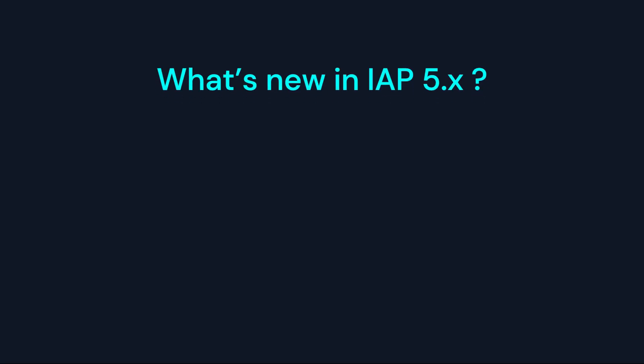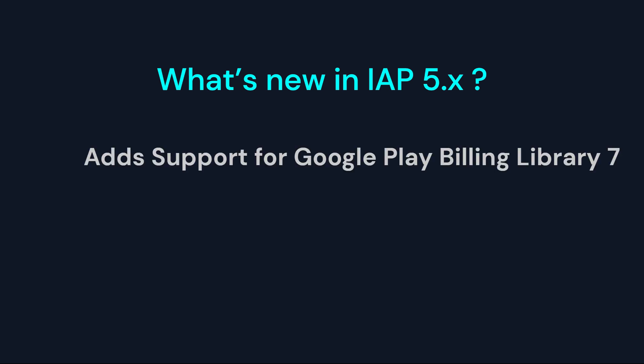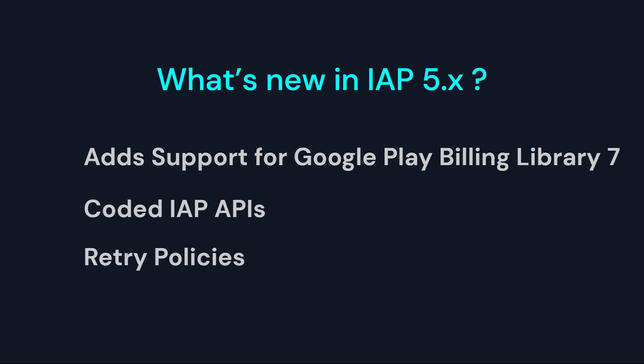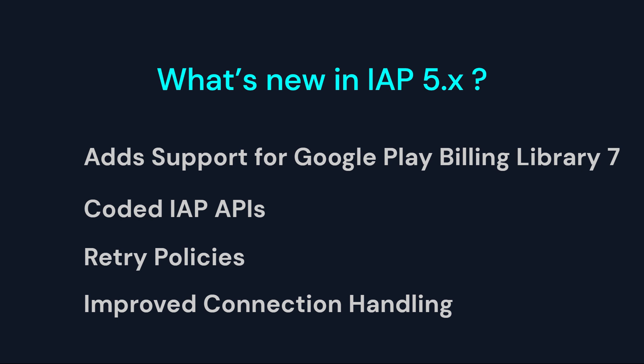What's new in IAP 5.x? Unity IAP 5.x is a major update. The biggest change is it adds support for Google Play Billing Library 7, which Google will require for all app updates after August 31st, 2025. It also introduces new features like coded IAP APIs, retry policies, and better connection handling, making the IAP system more reliable, especially for players on slow or unstable networks — no need to write your own retry code.